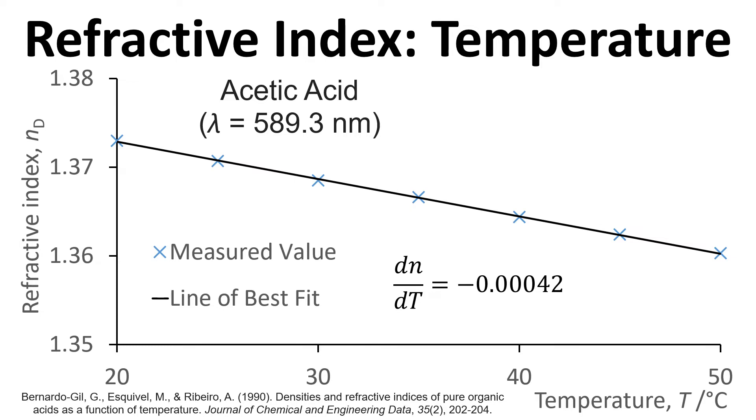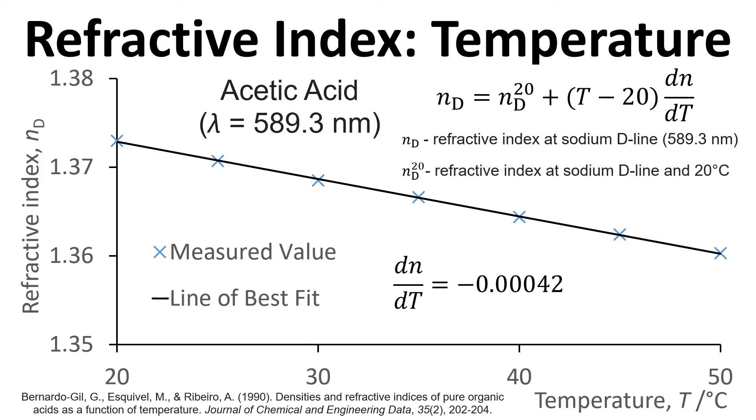In this case, between 20 degrees and 50 degrees for acetic acid at 589.3 nanometers, it varies by minus 0.00042. We can use this value in the equation shown here. N_D, D refers to the sodium D line, the 589.3 nanometers, and that will equal N_D²⁰, so that is the refractive index of the medium at 20 degrees Celsius.